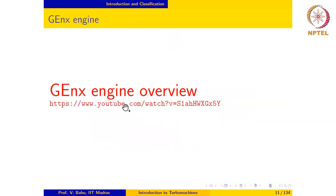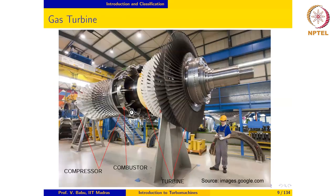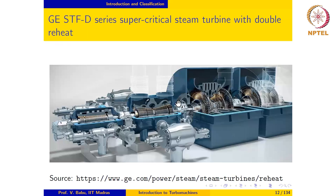The machines we looked at so far — the gas turbine and the aircraft engine — would be classified as axial machines and as thermal turbo machines, because air is the working substance. The next one is also a thermal turbo machine and an axial machine, but it is an axial steam turbine: the GE supercritical steam turbine, used for generating power in steam power plants.